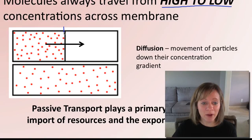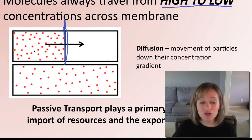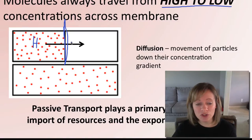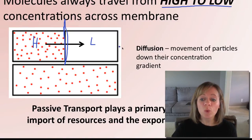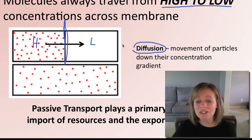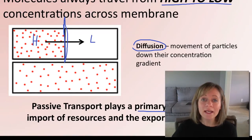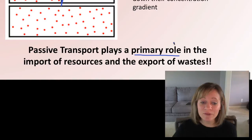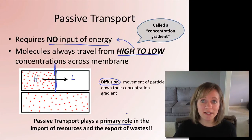Here we have a membrane — we're looking at transport across a membrane. Here's a high concentration of solute, and here's a low concentration of solute. Automatically, that solute is going to travel down its concentration gradient from high to low. We call this diffusion. Diffusion is simply the movement of particles down their concentration gradient. This is always happening and plays a primary role in the import of resources and the export of waste in every single one of your cells.